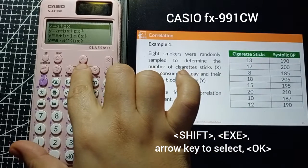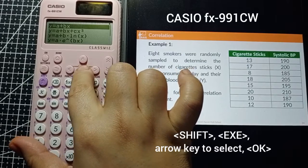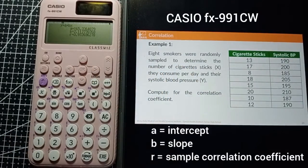a represents the intercept, b represents the slope of the line, and r represents the sample correlation coefficient.